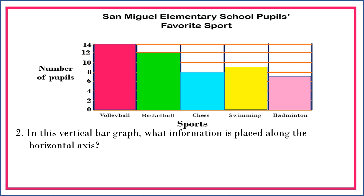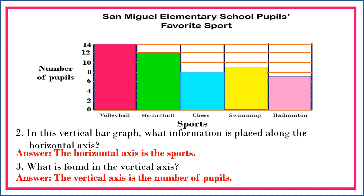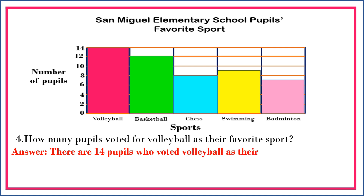Next question: in this vertical bar graph, what information is placed along the horizontal axis? The horizontal axis shows the sports. What is found in the vertical axis? The vertical axis is the number of pupils. Question four: how many pupils voted for volleyball as their favorite sport? There are 14 pupils who voted for volleyball as their favorite sport.